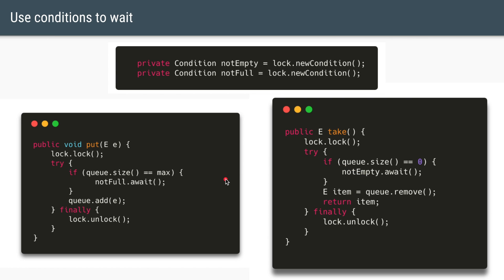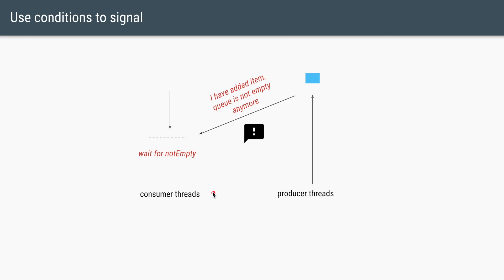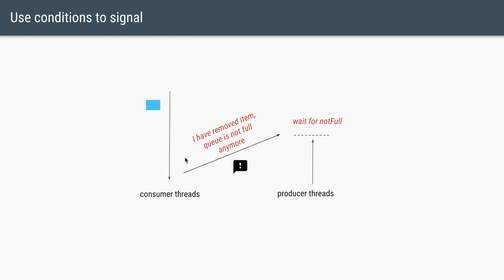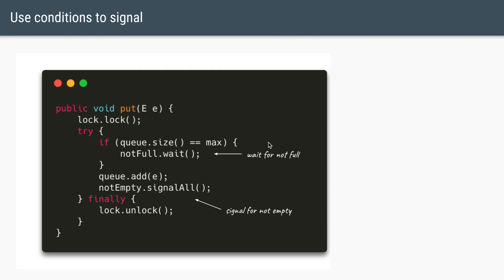Both threads are waiting for a condition — but who triggers it? A consumer thread waiting on notEmpty gets signaled by a producer: as soon as the producer adds an item it knows the queue is not empty anymore and sends a signal. Similarly, when a producer is waiting because the queue is full, a consumer takes an item out and signals the producer that the queue is no longer full.